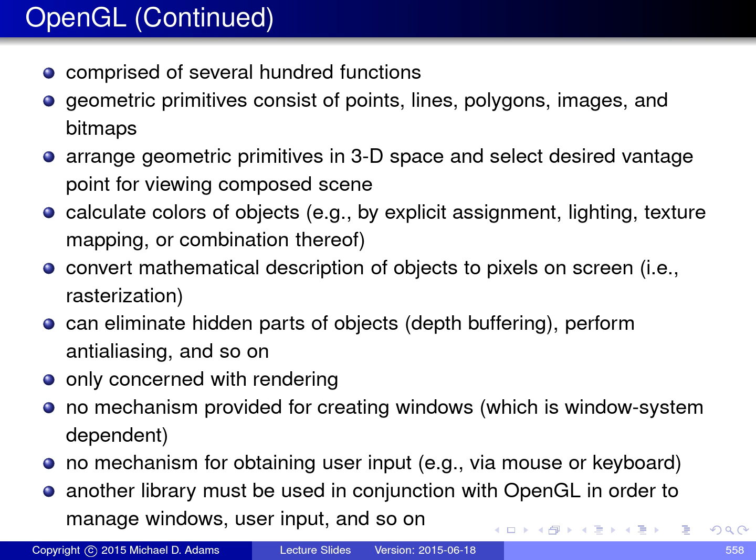OpenGL is a fairly large library comprised of several hundred functions. It supports a number of basic geometric primitives including points, lines, polygons, images, and bitmaps. It allows you to arrange these primitives in three-dimensional space and select a desired vantage point for viewing the composed scene. It handles rendering issues such as calculating colors of objects — either by explicit assignment, through lighting calculations, or through texture mapping — and converts the mathematical description of objects to pixels on the screen, taking care of rasterization.